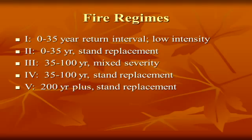I want to give you a real quickie on fire regimes, a little fire ecology. Most of the southeast U.S. is a fire regime one. It's a very frequent zero to 35-year return interval, and it's a low-intensity fire. That's just how, for thousands of years, the southeast fuels have evolved. Whether you're in the mountains or the Appalachians, it's fairly frequent — zero to 35-year return interval or rotation — and it typically is a low-intensity fire.